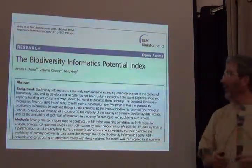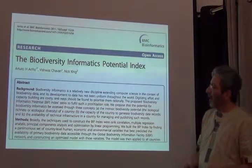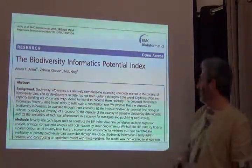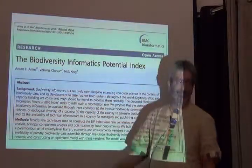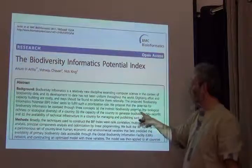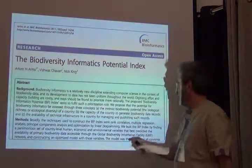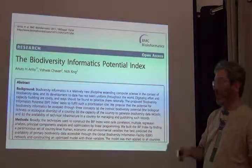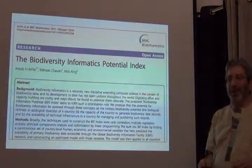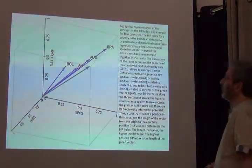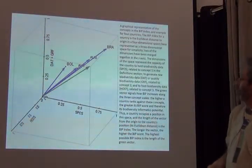Here's another exploration along the same lines: the Biodiversity Informatics Potential Index. It seeks to fulfill a prioritization role. It proposes that the potential for biodiversity informatics be assessed through three concepts: the intrinsic biodiversity potential — that's biodiversity richness — the capacity to generate biodiversity records within the country, and the technical infrastructure within the country. Here's a representation showing those axes, sorting different countries — Brazil, Australia, Bolivia — and showing different drivers.